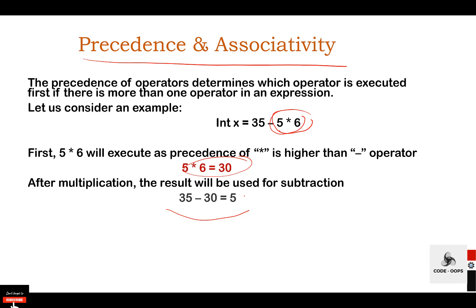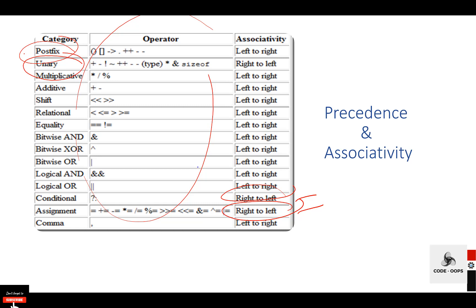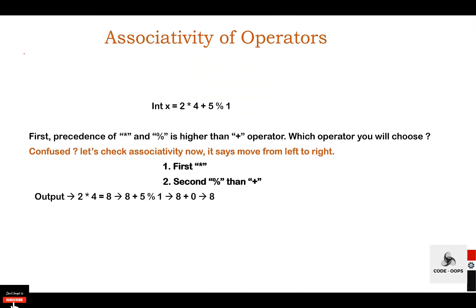Operator precedence determines which operator is executed first when there is more than one operator in an expression. This table lists C operator precedence from highest to lowest, along with the associativity for each operator. Most C operators have associativity from left to right. The conditional operator, assignment operator, and unary operators have associativity from right to left.